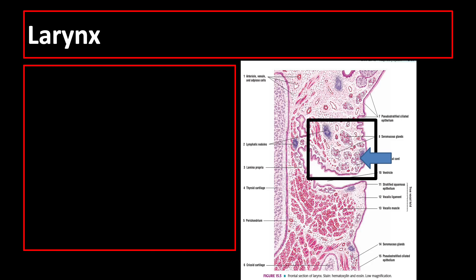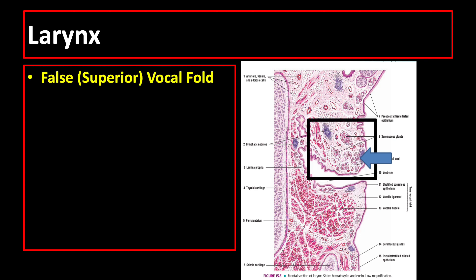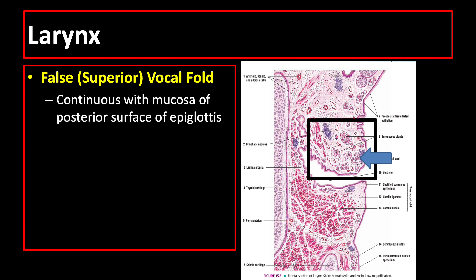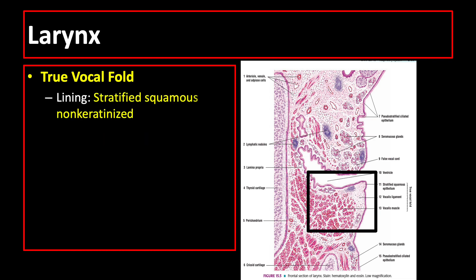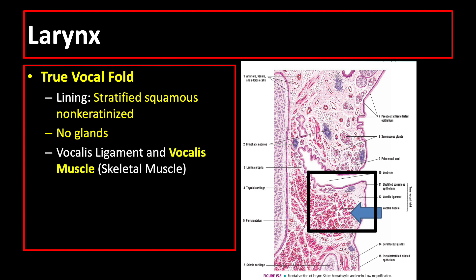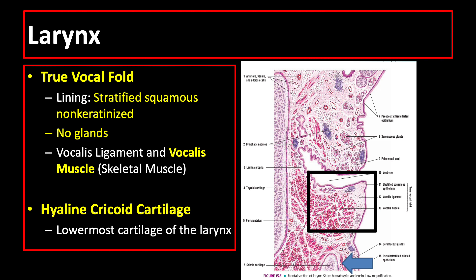The larynx has a false vocal fold, true vocal fold, and a ventricle. The false vocal fold is continuous with the mucosa of the posterior surface of the epiglottis and is lined by pseudostratified columnar ciliated epithelium with goblet cells. Underneath are mixed seromucous glands. The true vocal fold is lined by stratified squamous non-keratinized epithelium. Contrary to the false vocal fold, there are no glands; instead, you find the vocalis muscle, a skeletal muscle type. The cricoid cartilage, a hyaline type, is found at the lowermost portion of the larynx.